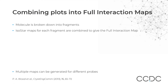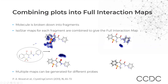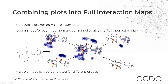To obtain a full interaction map, the molecule is broken down into fragments, and the Isostar maps for each fragment are then recombined to give the full interaction map. For example, for a given molecule and studying its interaction with the NH group, we break it down into fragments and generate the full interaction maps for each group's interaction with the NH group. These are then recombined to obtain a complete full interaction map for the whole molecule.